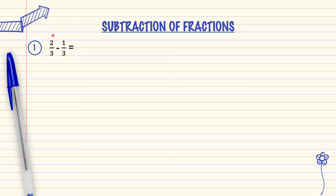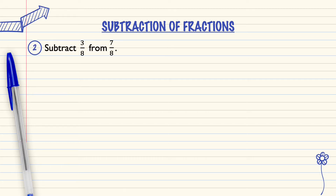2 minus 1 equals 1 over 3. The denominator stays the same — 3. The bottom number does not need to be subtracted; it remains 3. So 1 over 3 is the answer. Question number 2.